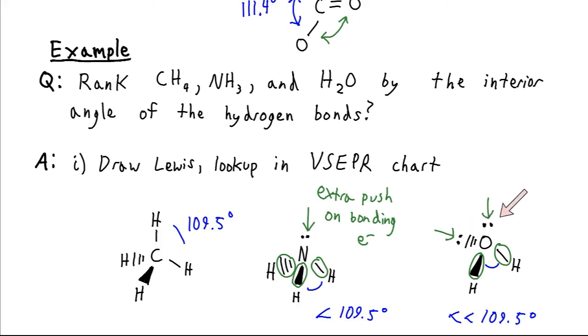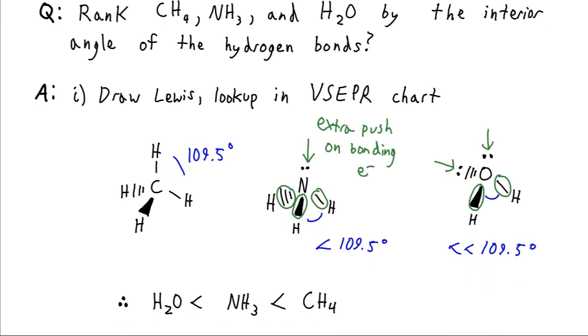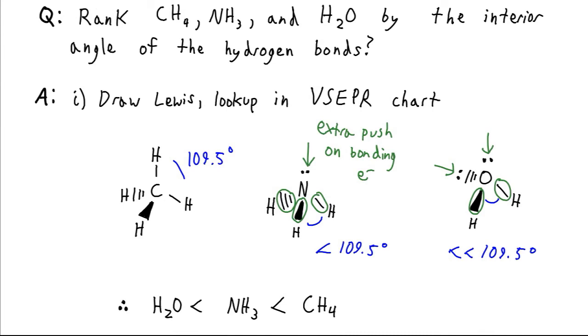Now water, which has two pairs of electrons, is going to have twice the effect. So the bond angle is going to be even more contracted. And so we would rank these as water having the smallest bond angle, followed by ammonia. And then methane has the largest bond angle, it has the perfect spacing of 109.5 degrees.